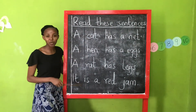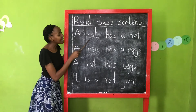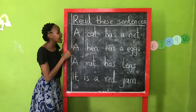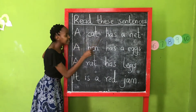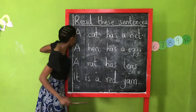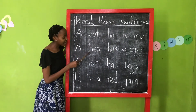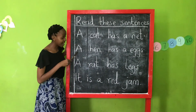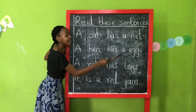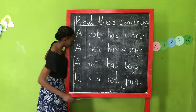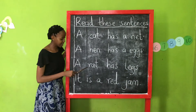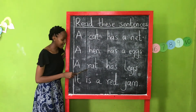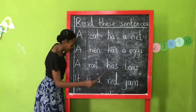Okay, these are the sentences we are going to read. A cat has a net. Read. A cat has a net. Very good. A hen has a net. Again. A hen has a net. Good. A rat has a net. A rat has a net. Yes. Very good.